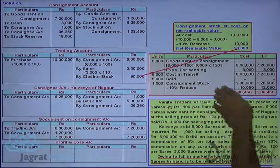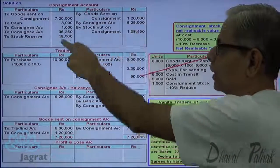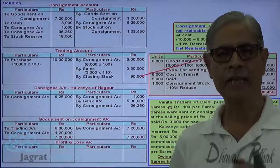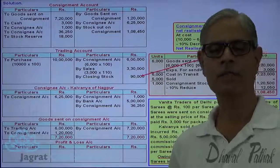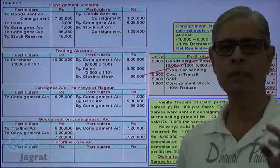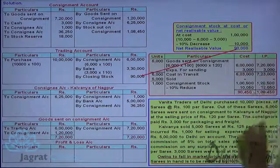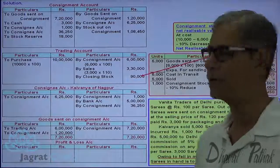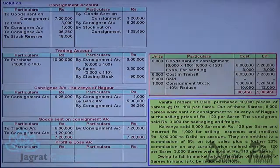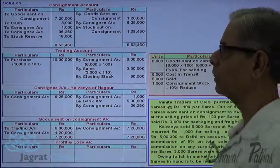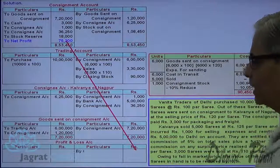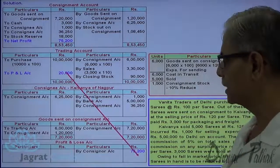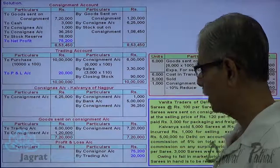There is an alternative way to report consignment stock. Instead of this version, there is an optional way wherein proposed expenses will be ignored — I will demonstrate that in the next sum. After this video, if you refer to the next sum, you will understand the alternative valuation of consignment stock where proposed expenses are not considered. But here the consignment stock value is ₹90,000. The profit is calculated as total credits minus total debits, and that profit is transferred to the credit side of the profit and loss account.